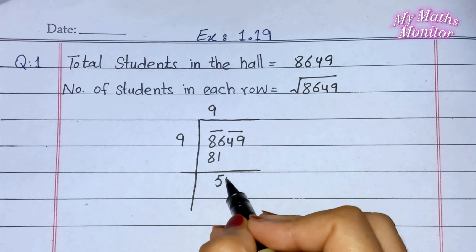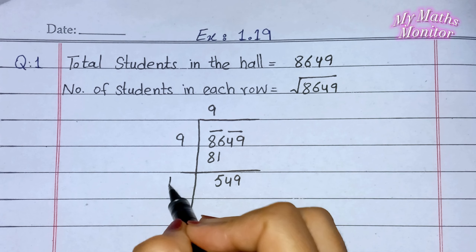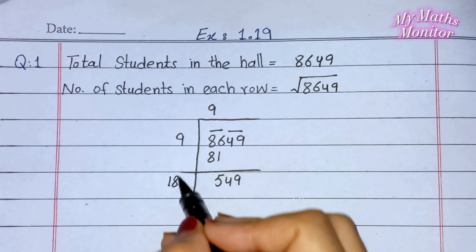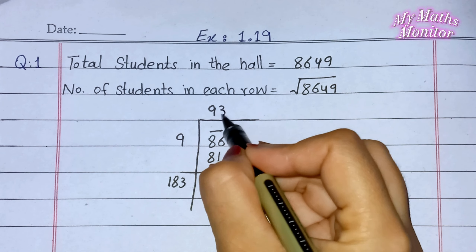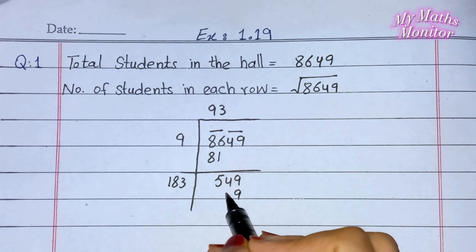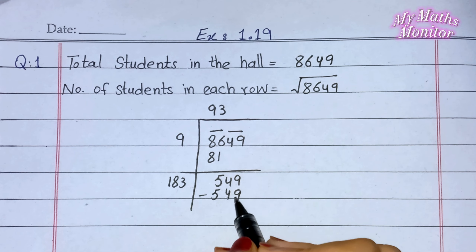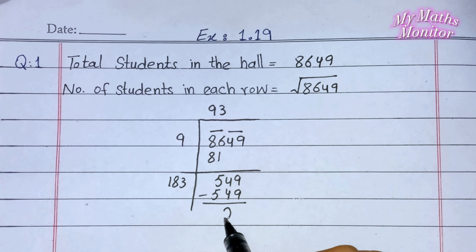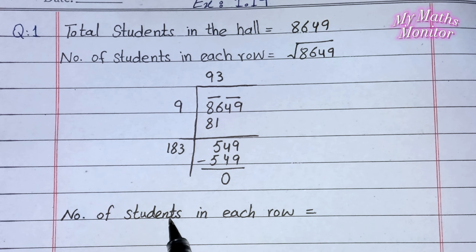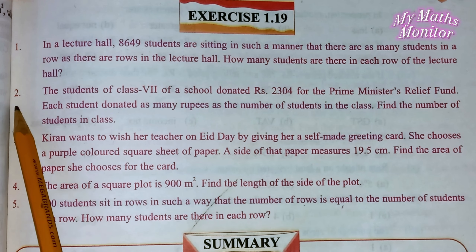49 complete pair یہاں پہ write کریں گے۔ 9 میں 9 کو add کریں گے تو value آئے گی 18۔ 18 کے ساتھ new number 3 لکھیں گے — 183 کو 3 کے ساتھ multiply کریں گے: 183×3=549۔ 549 minus کریں گے، remaining value 0۔ Number of students in each row — ایک row میں طلبہ کی تعداد ہے 93۔ Square root سے find out کیا، ایک row میں طلبہ کی تعداد ہے 93۔